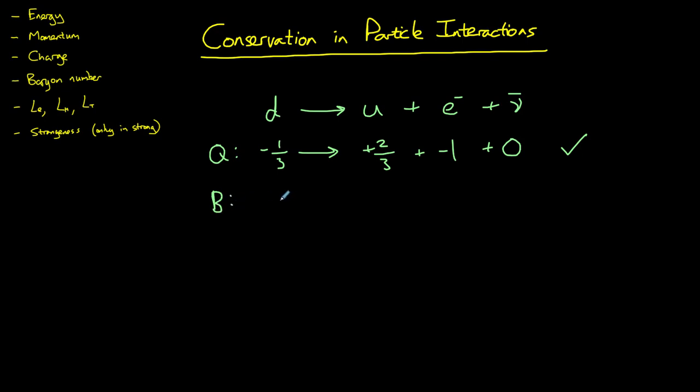Let's check the baryon number. A down quark has a baryon number of one third. An up quark has a baryon number of one third. And since electrons and anti-neutrinos are both leptons they have baryon numbers of zero.